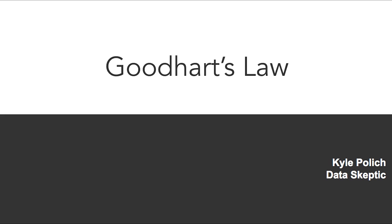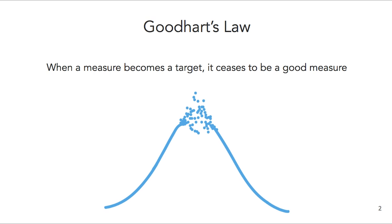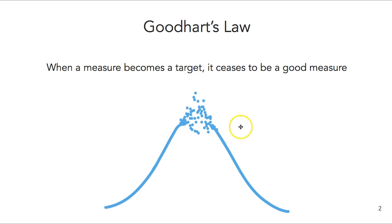Let's get into the formal definition. Goodhart's Law says, roughly, when a measure becomes a target, it ceases to become a good measure. This is my attempt to visualize that a little bit. Think of this as some function we're trying to optimize, but as we get close to the peak optimal position, we start getting a lot of stochastic noise.